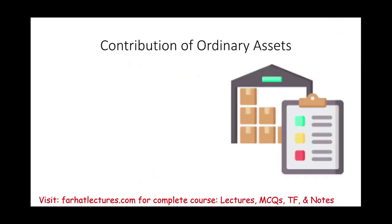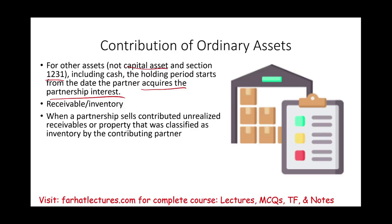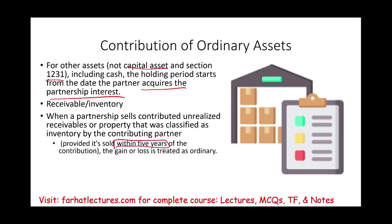What if you contribute an ordinary asset? We're looking at receivables and inventory — any asset other than a capital asset and Section 1231. The holding period for this asset starts from the date the partner acquires the partnership interest — it's not a continuation; it starts from the time you contributed to the partnership. When a partnership sells unrealized receivables or property qualified as inventory by the contributing partner, provided it's sold within five years, the gain or loss is treated as ordinary income.